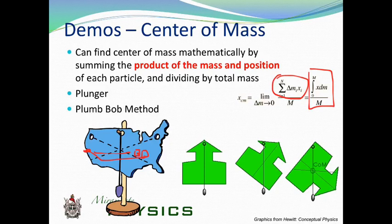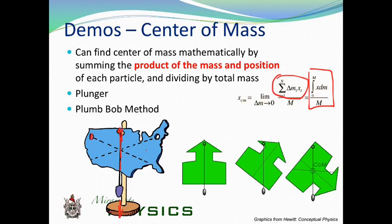In class, if you have a weird shape, here's a fun technique. If you have the United States and you want to find its center of mass, you use what's called the plumb bob method — you punch a little hole, then make a line using your plumb bob, which is something that falls straight down in the direction of the gravitational force. If you hang it from three different positions, where those lines intersect is going to be your center of mass.